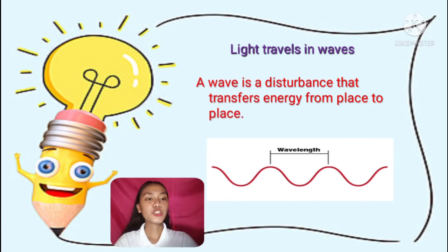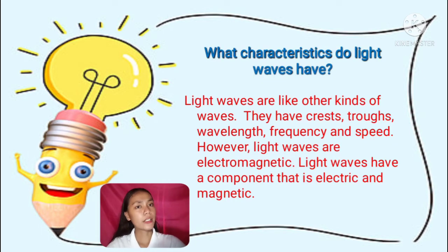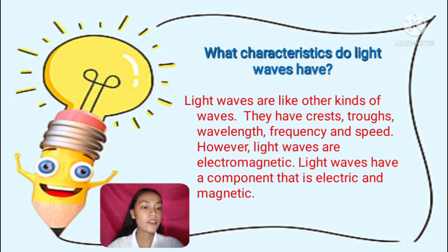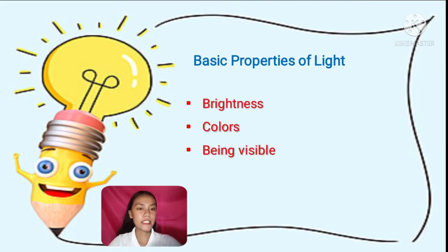Light also travels in waves. A wave is a disturbance that transfers energy from place to place. Light waves, like other kinds of waves, have crests, troughs, wavelength, frequency, and speed. However, light waves are electromagnetic — they have both an electric and a magnetic component. Light also has basic properties: brightness, color, and being visible.